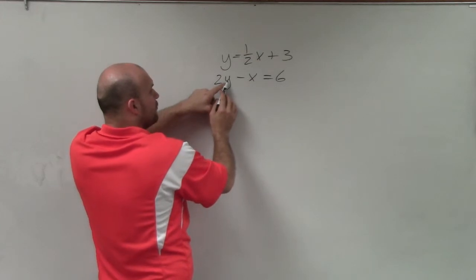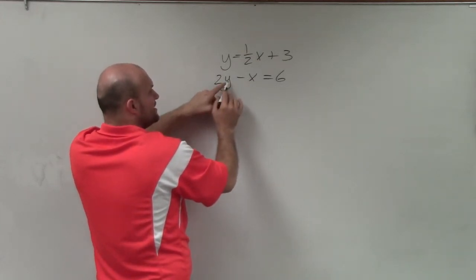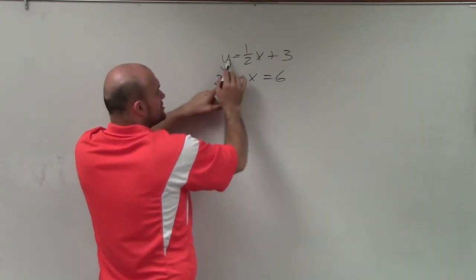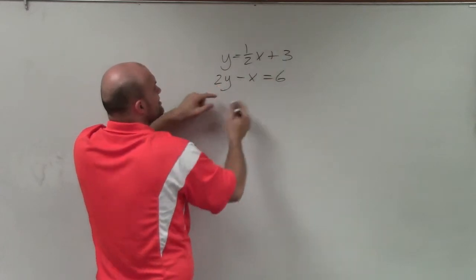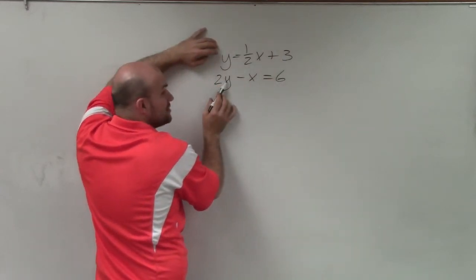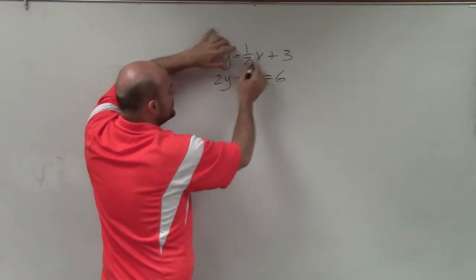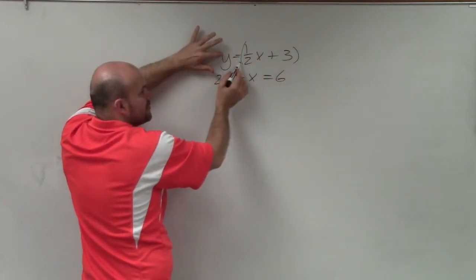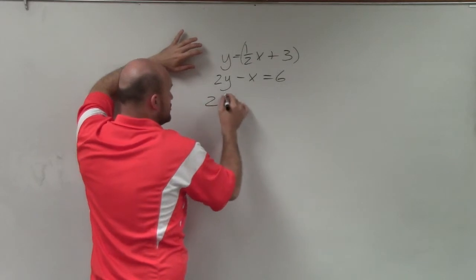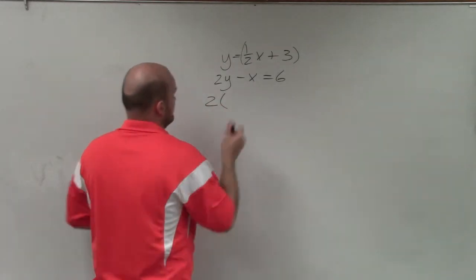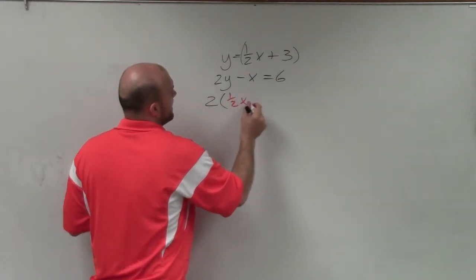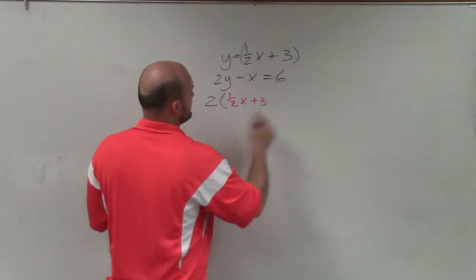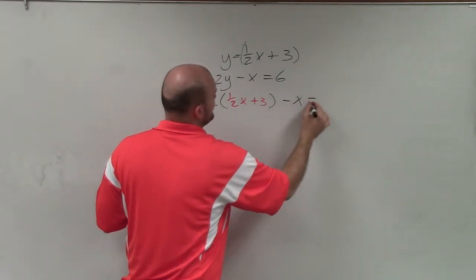Now, I know that y, in this case, is also equal to this. So what I'm going to do is I'm going to say instead of using the value of the variable y, I'm going to use the value of the variable y of what it's equal to from the other equation. So I'm going to say 2 times 1 half x plus 3 minus x equals 6.